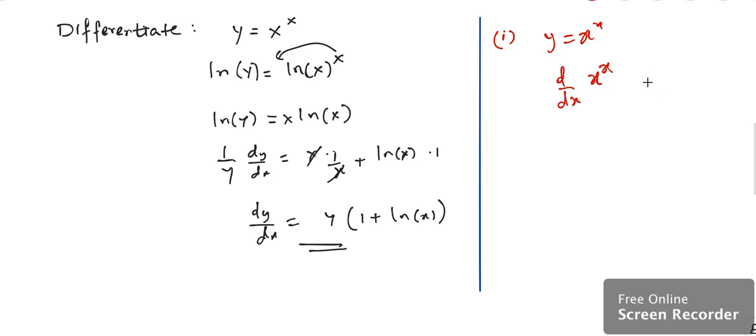So we know one thing: e raised to ln x equals x. So I'm going to replace x with e raised to ln x, giving us x raised to x equals e raised to x ln x.